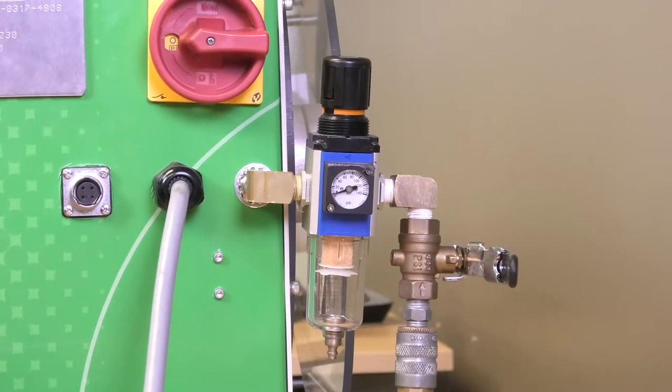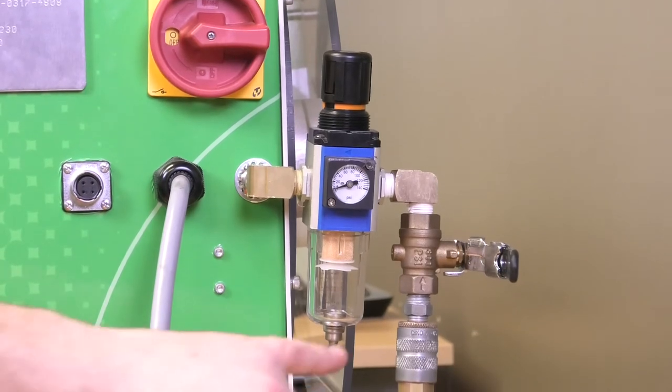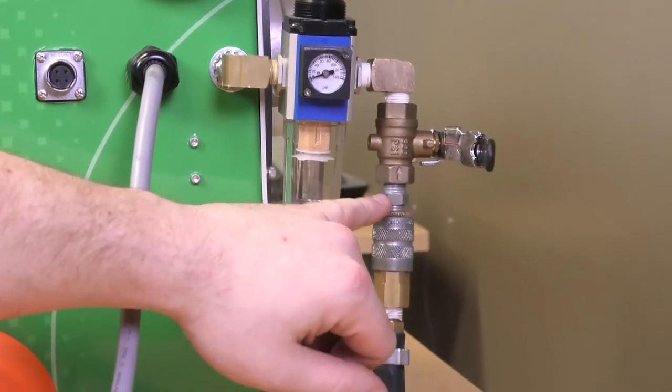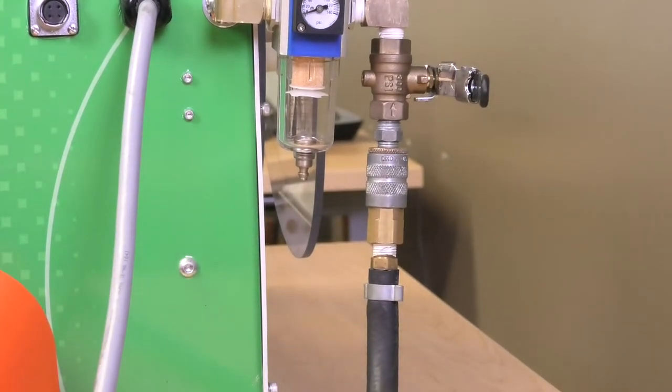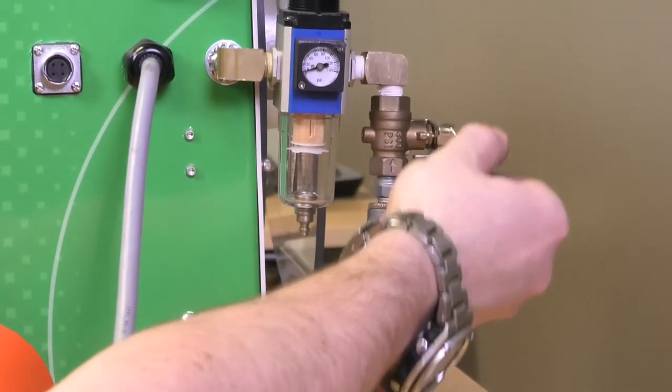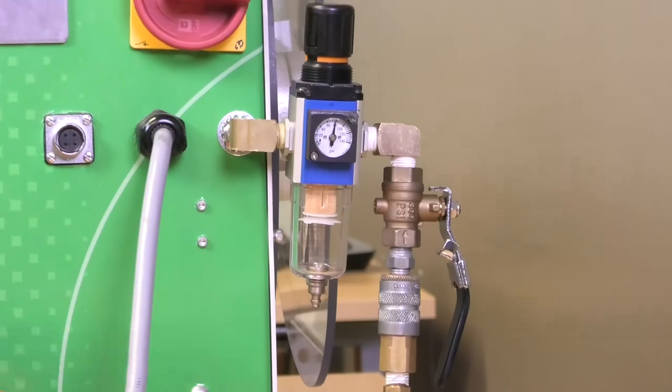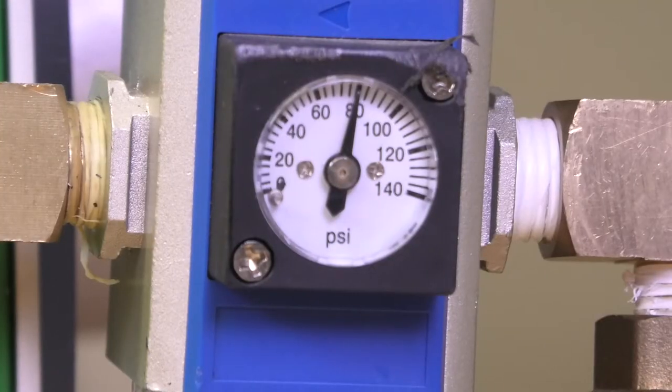When setting up your air regulator, you want to make sure that you have a female and male fitting for a quick disconnect. Once installing those items, you want your air regulator to be set around 80 psi.